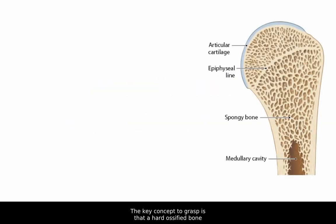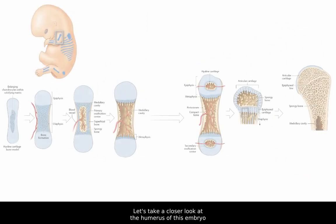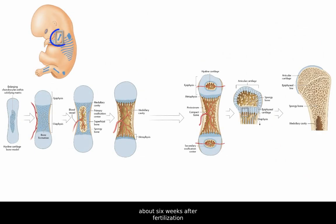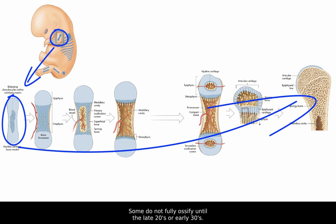The key concept to grasp is that a hard ossified bone in the adult actually begins in the embryo as a miniature version made of hyaline cartilage. Let's take a closer look at the humerus of this embryo about six weeks after fertilization to see how the miniature cartilaginous model is progressively replaced with ossified bone. This process is not fully completed in all bones until after puberty. Some do not fully ossify until the late 20s or early 30s.